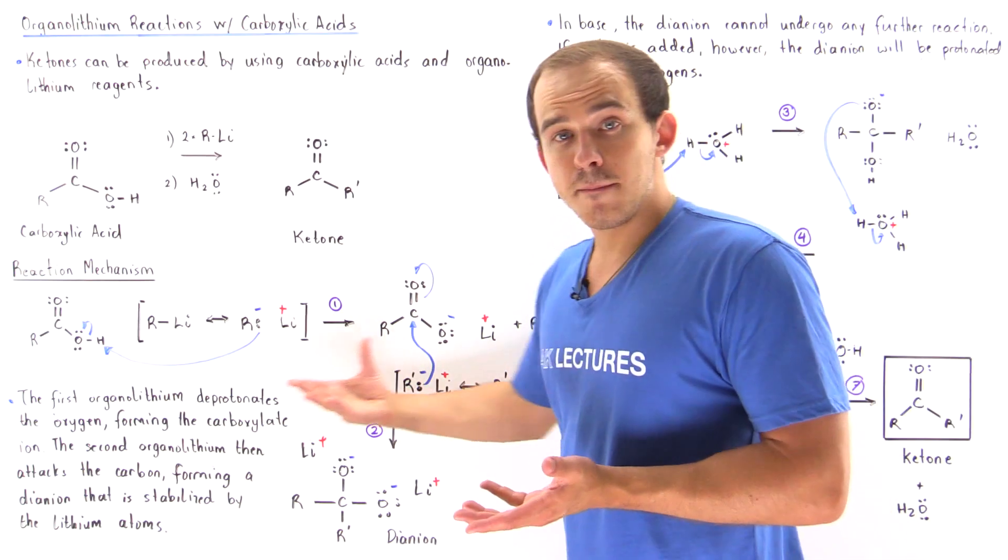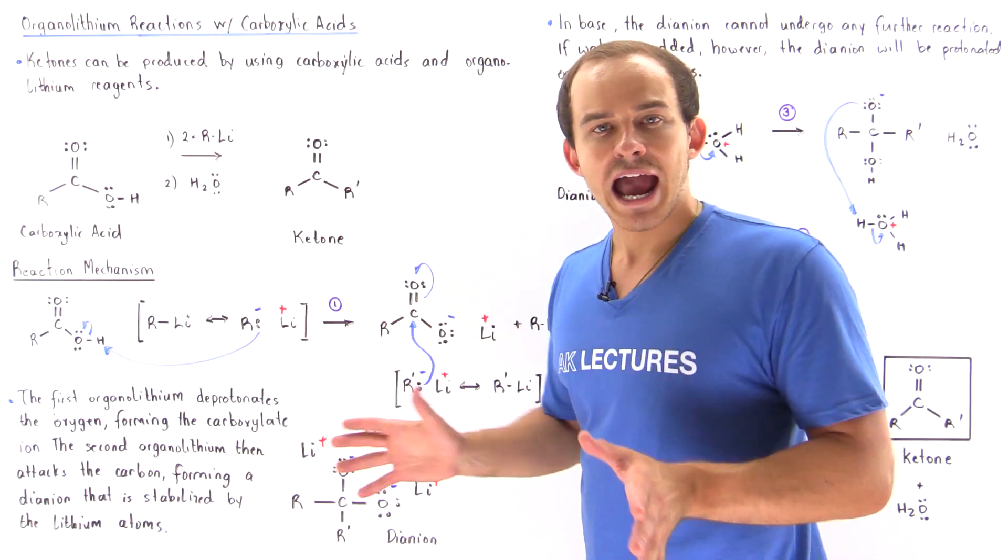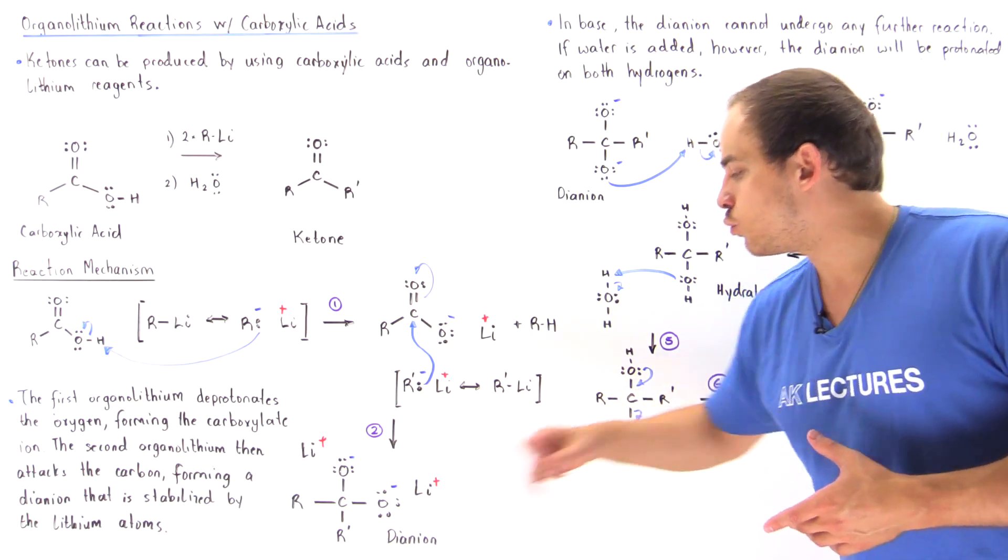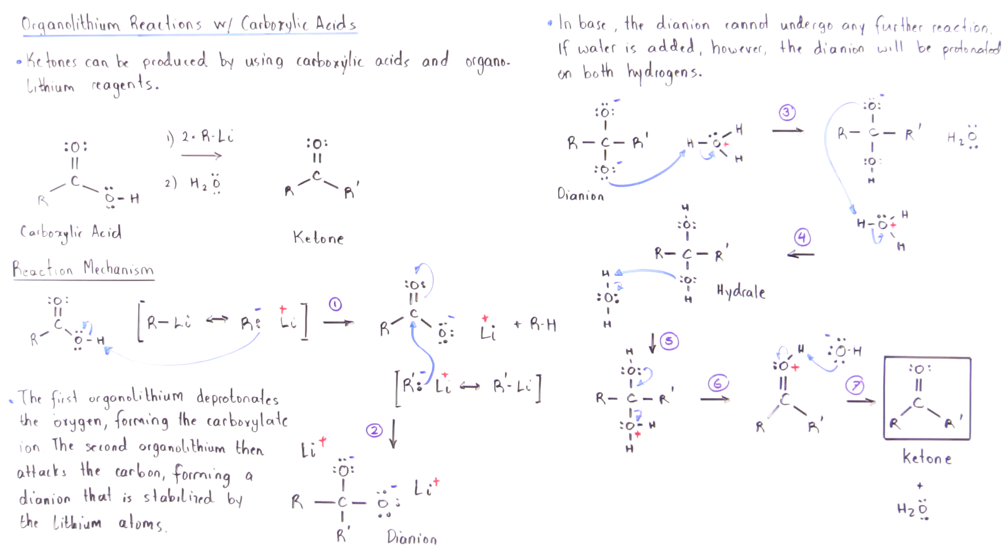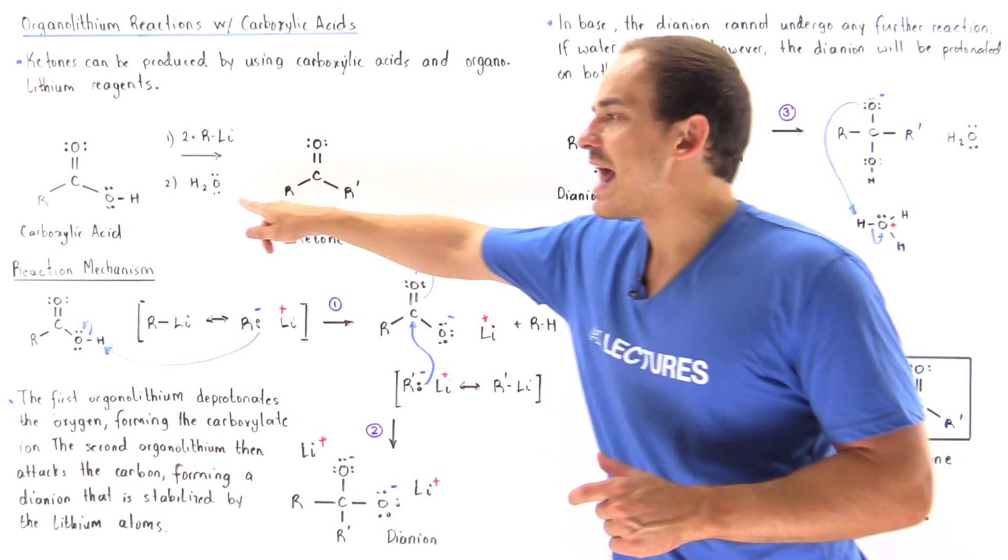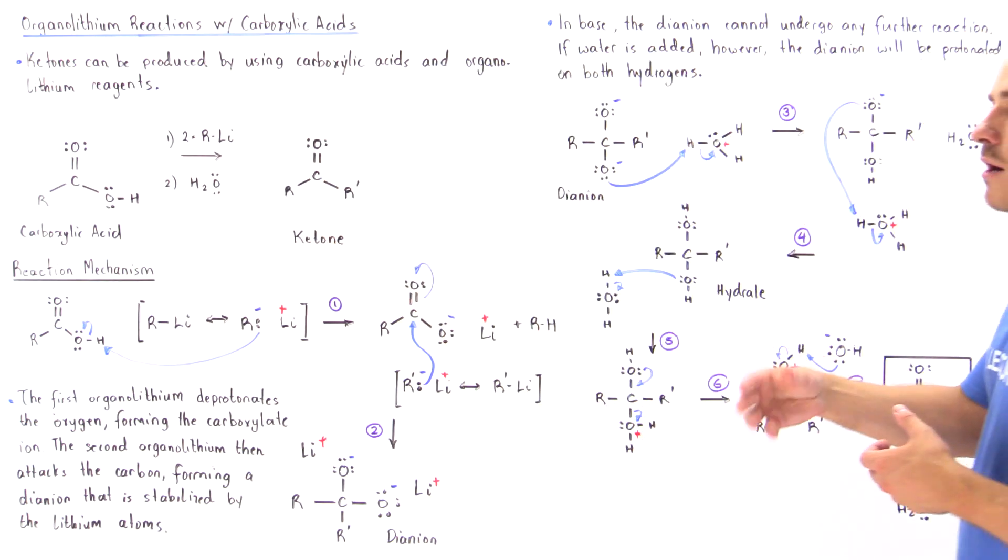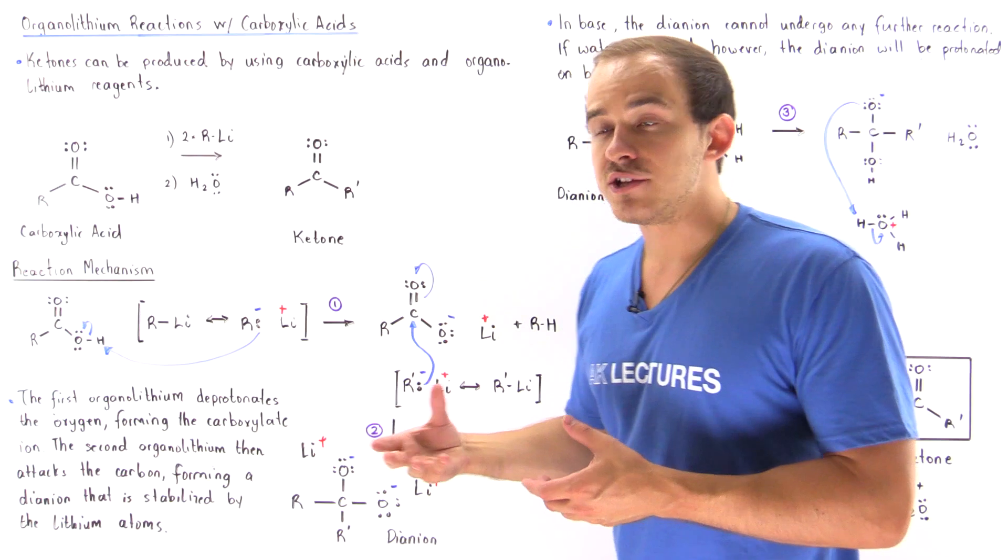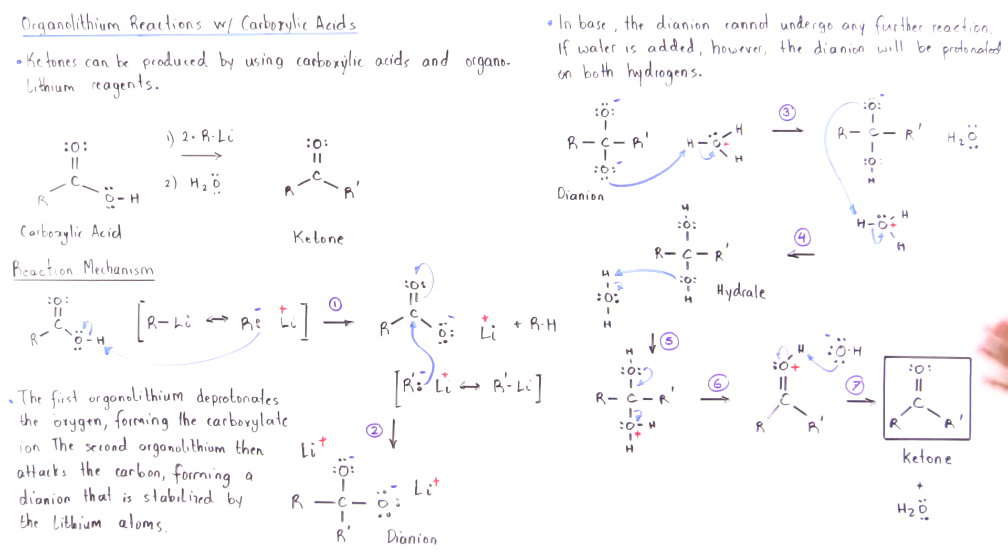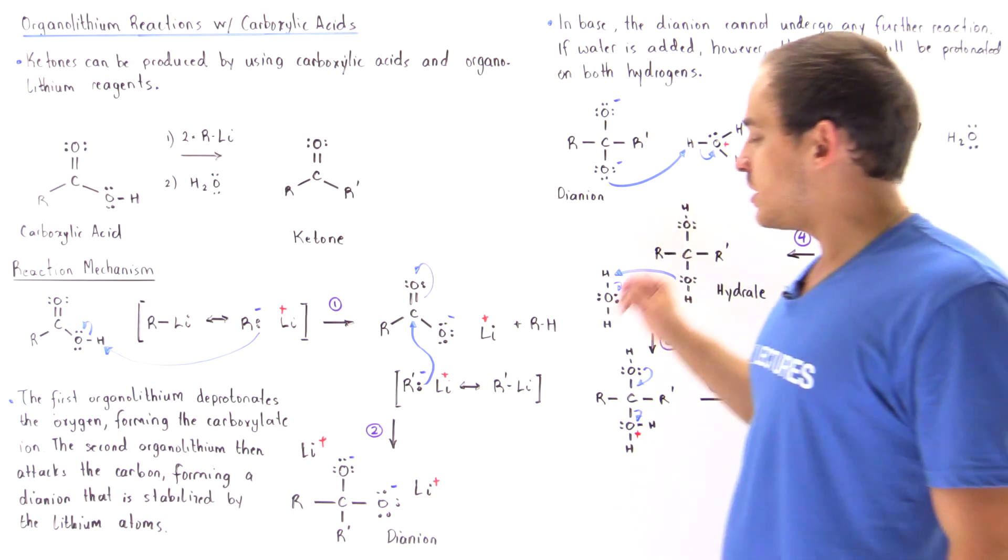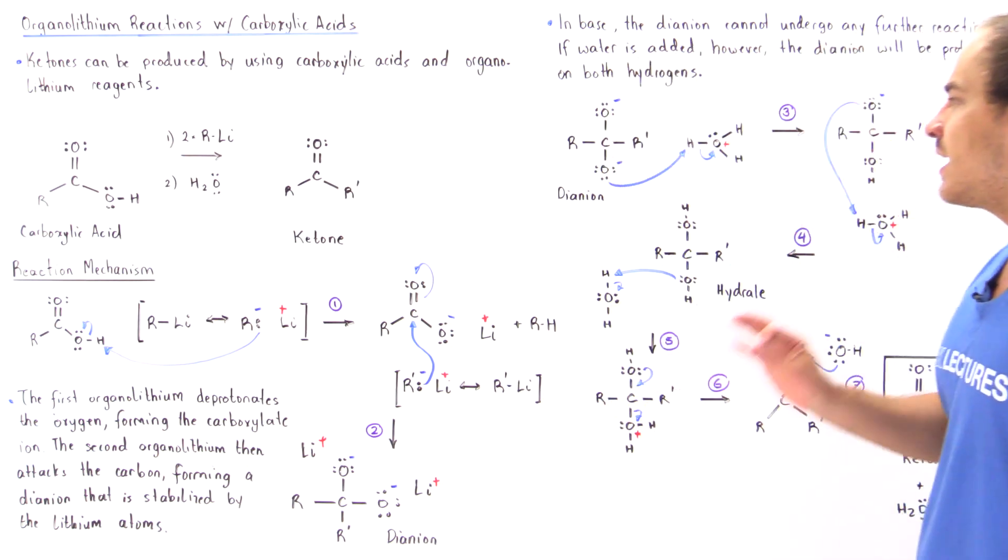In the presence of a base, no further reaction can take place with the di-anion molecule. But if we add water, we also add a tiny bit of hydronium ion. Now that we have an acid, the reaction can take place between the hydronium and the di-anion.